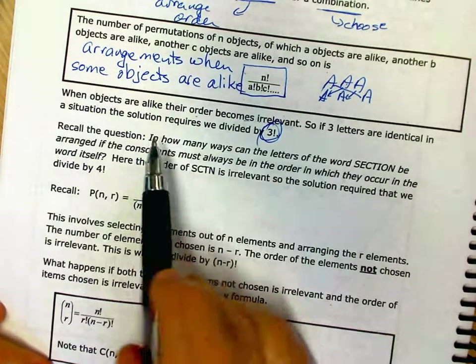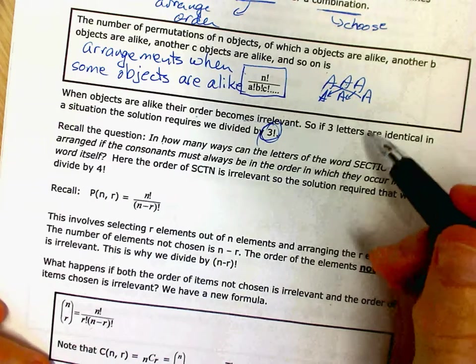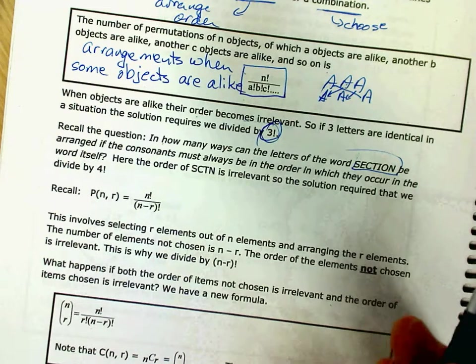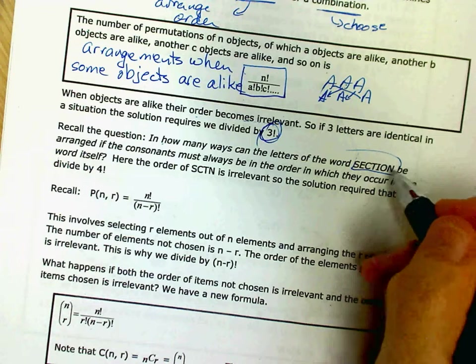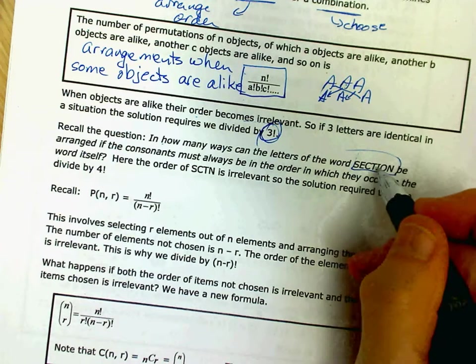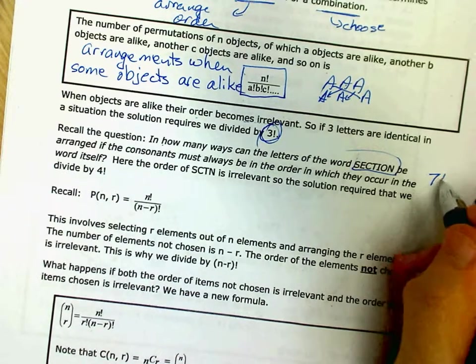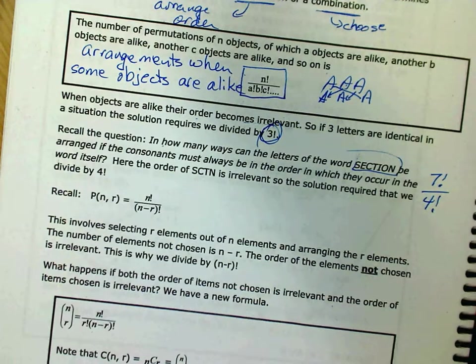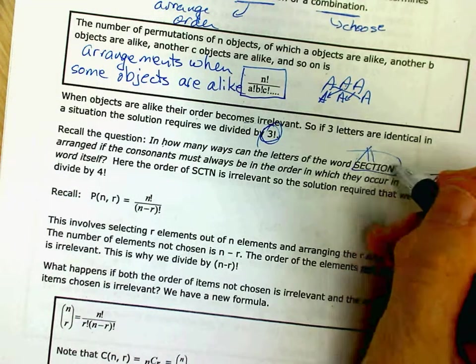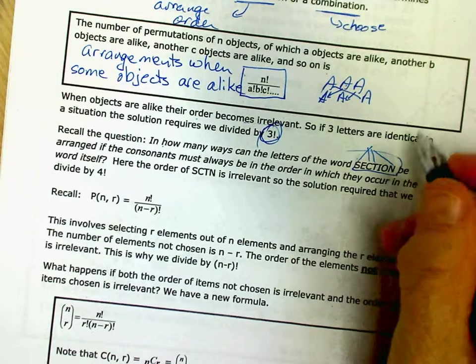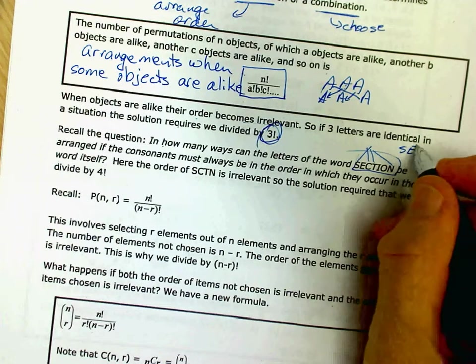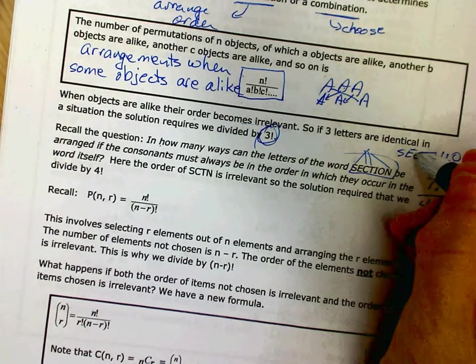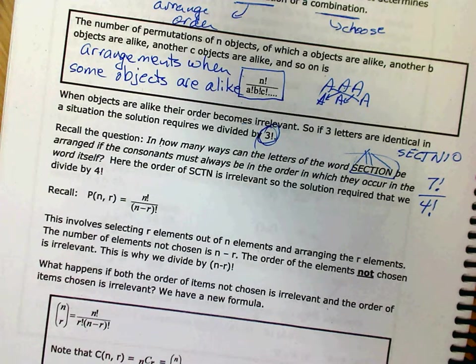Do you remember the question, how many ways can the letters of the word SECTION be arranged if the consonants must always be in the same order? Well, if the consonants have to be in the same order, their order is irrelevant. So that's why we would just go seven letters divided by one, two, three, four consonants, and we divided that out. Because in that case, the order of S, C, T, N was irrelevant because it always, S always had to be before C, it always had to be before T, and before N, and whatever, S, C. It always had to be in the same order.